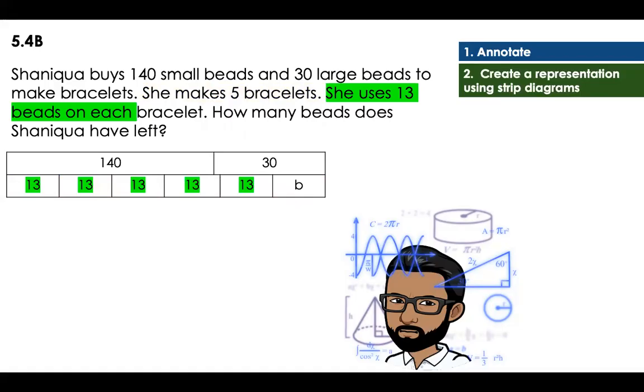So now, each of those five parts are going to have 13. And then we're going to call the left, we're going to call it B. Why B? It's just to call it like the beads that she has left. Now, we can create the equation.